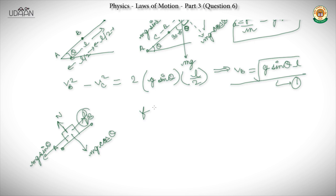We will see that N equals mg·cos θ, because perpendicular to the inclined plane there is no motion. By the equilibrium condition we equate the forces. So we have friction force F equal to μ·mg·cos θ.